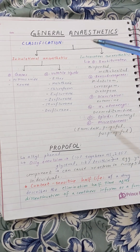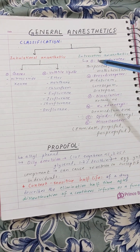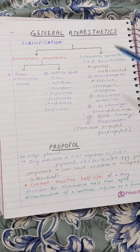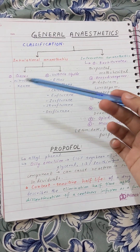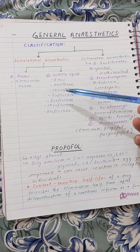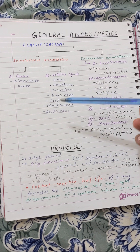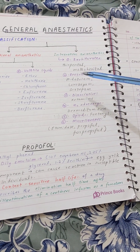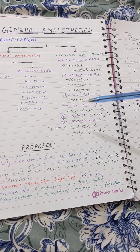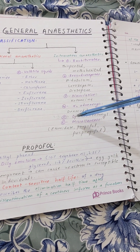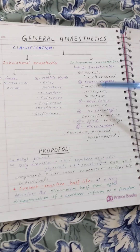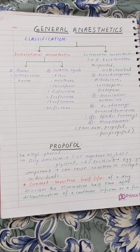In this video we saw the classification of general anesthetics. For inhalational anesthetics — gases: nitrous oxide and xenon; volatile liquids: ether, halothane, chloroform, enflurane, desflurane, sevoflurane, and isoflurane. For IV anesthetics — barbiturates: thiopental; benzodiazepines: midazolam; dissociative: ketamine; alpha-2 adrenergic: dexmedetomidine; opioids: fentanyl; miscellaneous: etomidate, propofol, and fospropofol. This was the classification of general anesthetics.